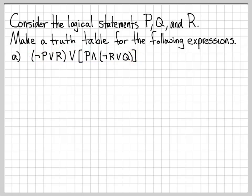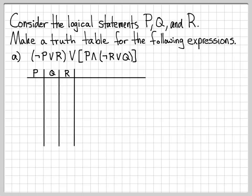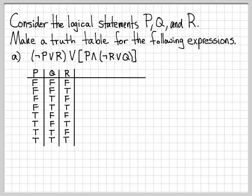The first thing we need to do is construct our table with columns for the variables P, Q, and R. We follow the convention of starting with all false and slowly building up to all true. So we go FFT, FTF, FTT, TFF, TFT, TTF, and then TTT. Start with all false, then toggle your way up to all true. That is the convention we use to construct our truth tables.